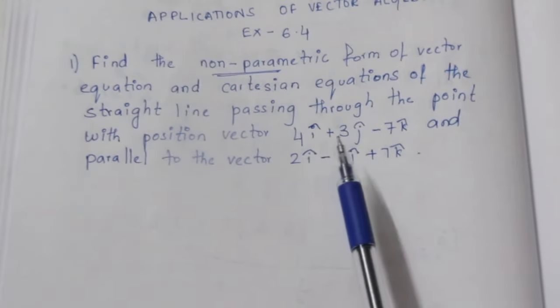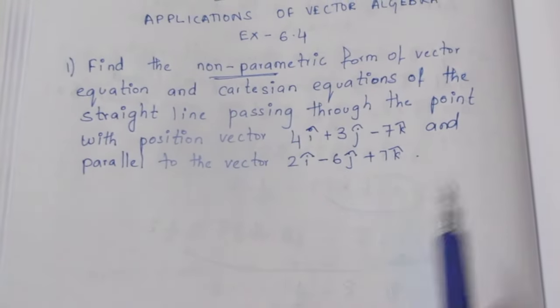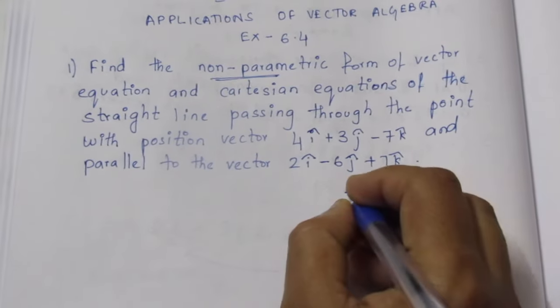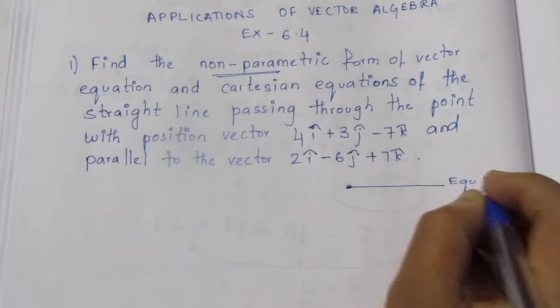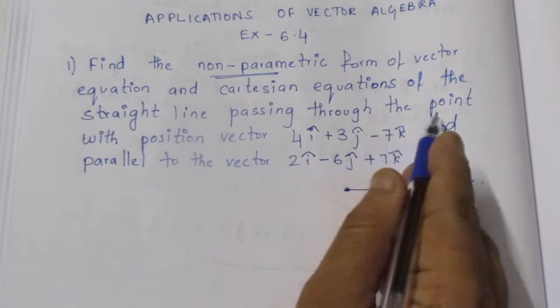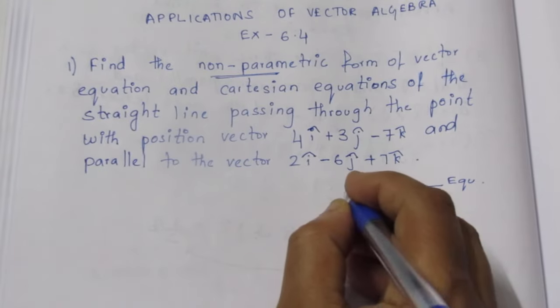How to form a straight line passing through a point. Now I will write. Straight line passing through the point of a position vector. Now I will write a position vector.